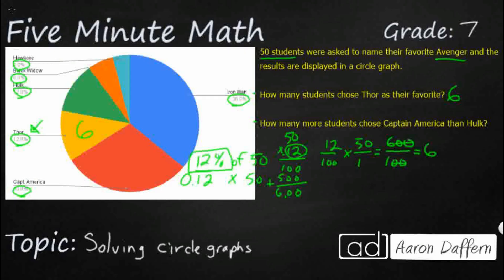So we could do that with all of these here and find numbers. And we're going to have to do that for our second problem, which is how many more students chose Captain America than Hulk. And right now Captain America is sitting at 30%. Hulk is sitting at 12%. So we need to go ahead and change both of those into our whole numbers here.